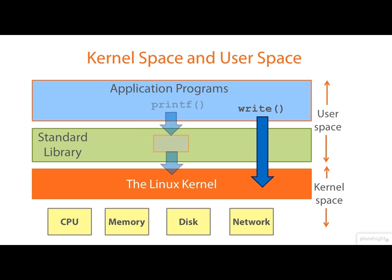As another example, consider the familiar printf routine. This isn't a system call — it does all its fancy formatting in user space, but it presumably eventually calls write to actually push the resulting byte stream out. Other library routines, such as sqrt, which calculates square roots, operate entirely in user space and return their result to the program without ever diving into the kernel.